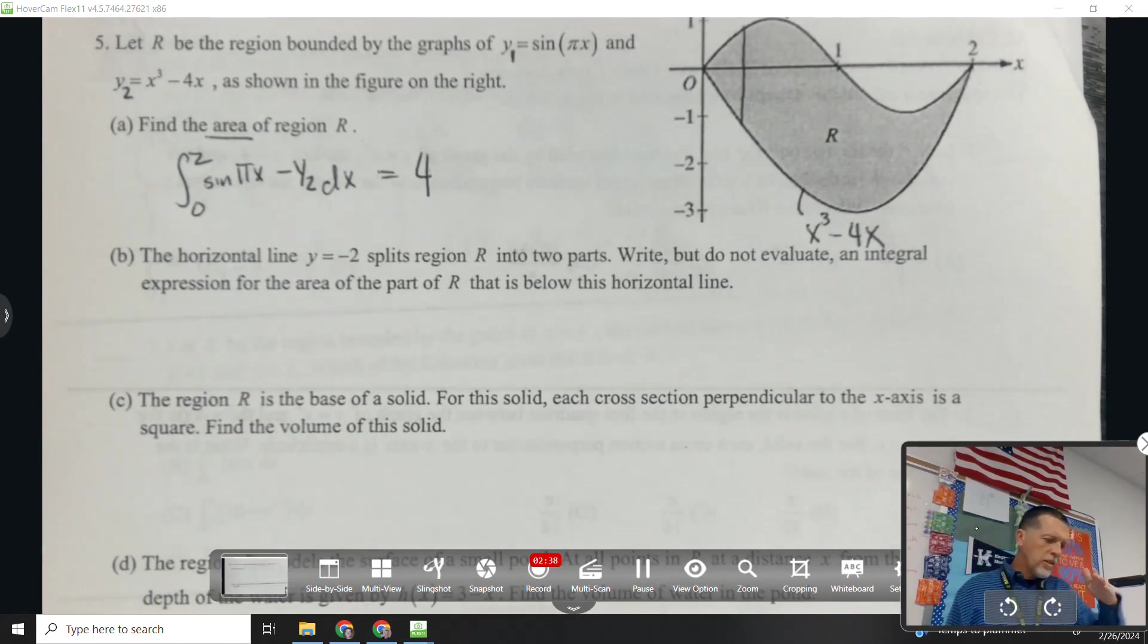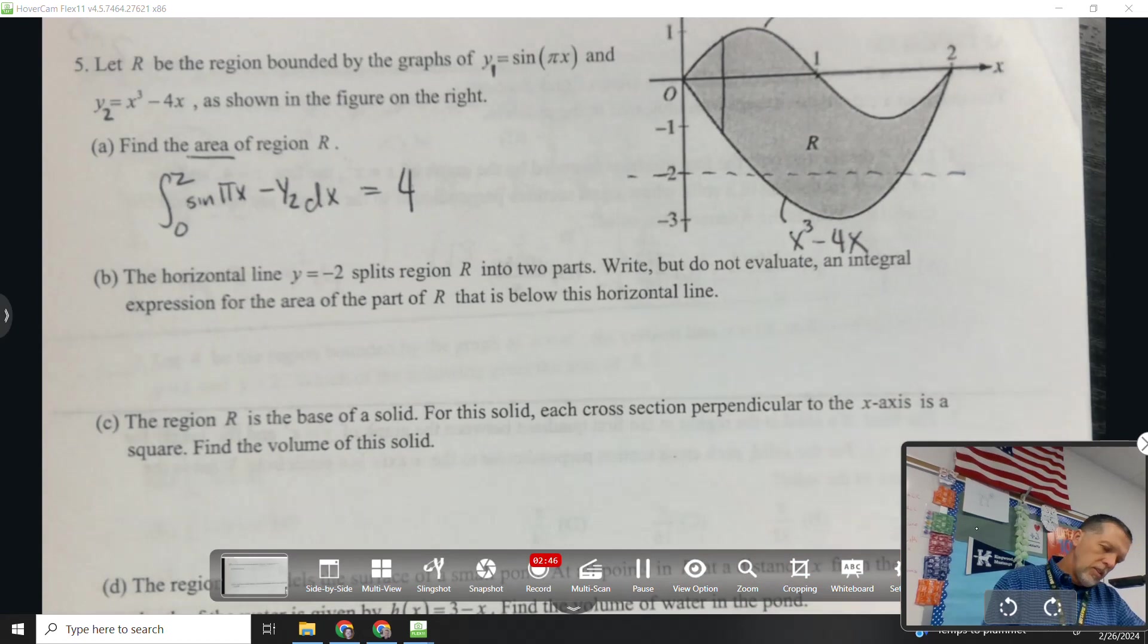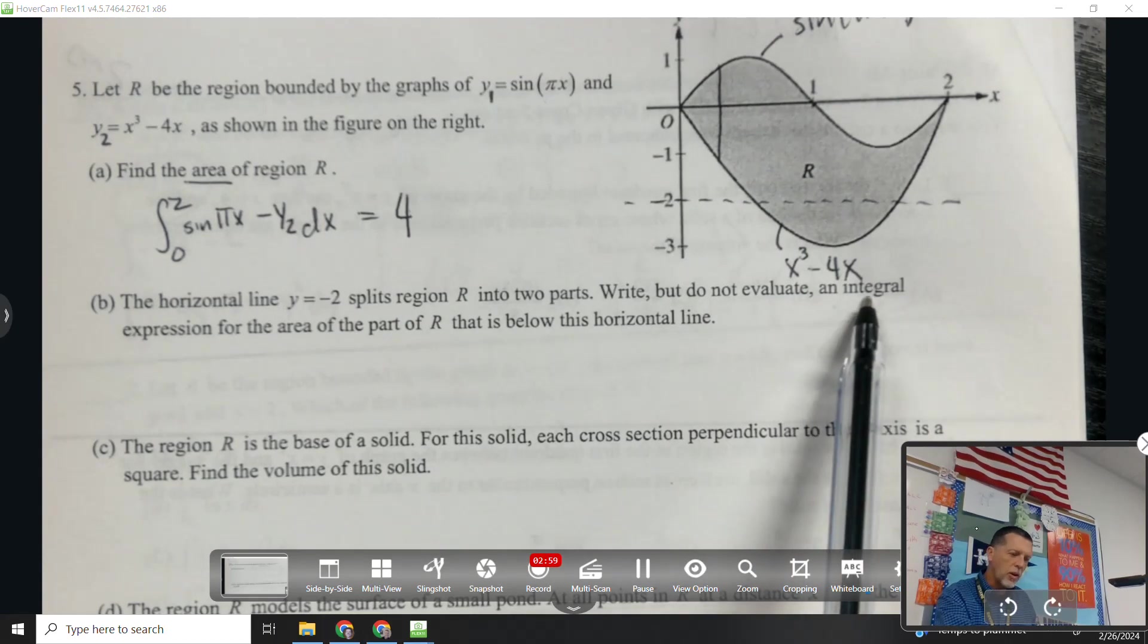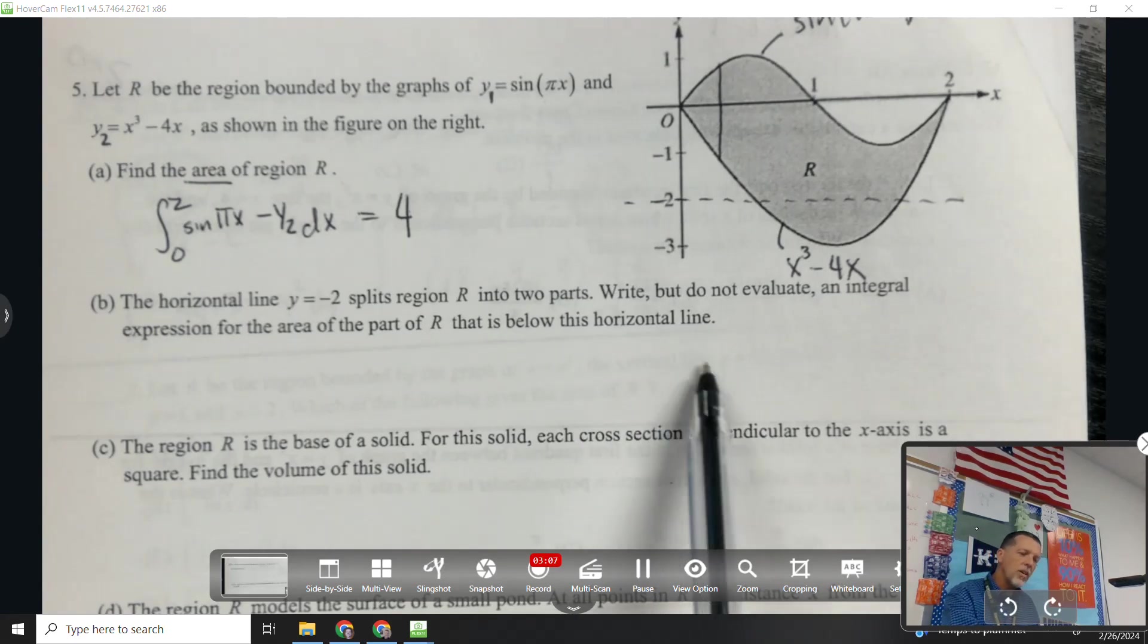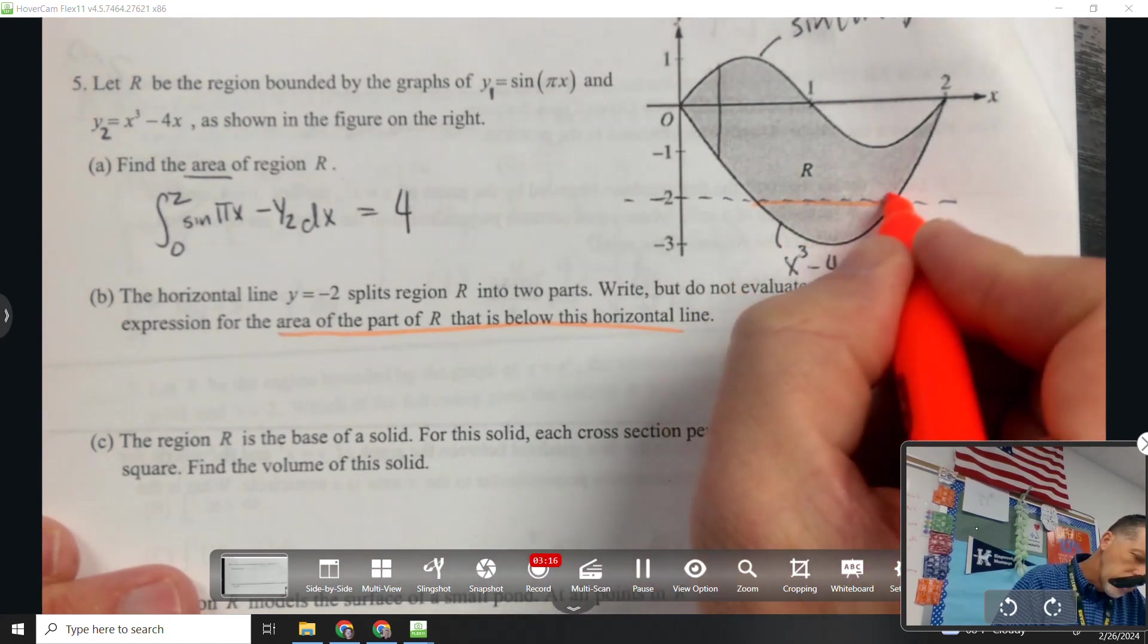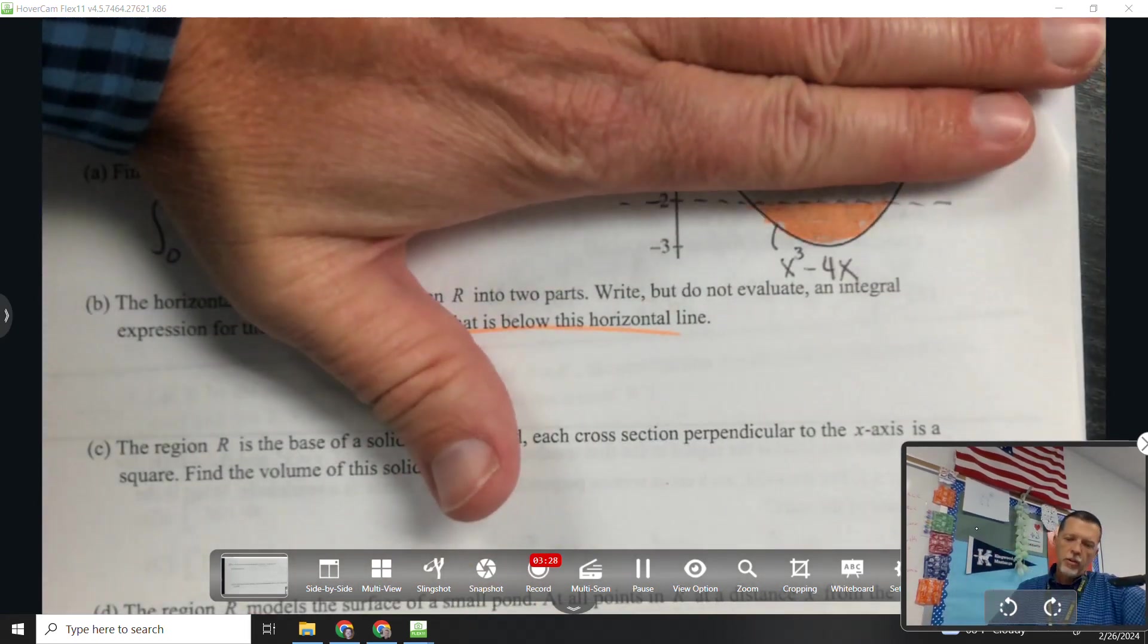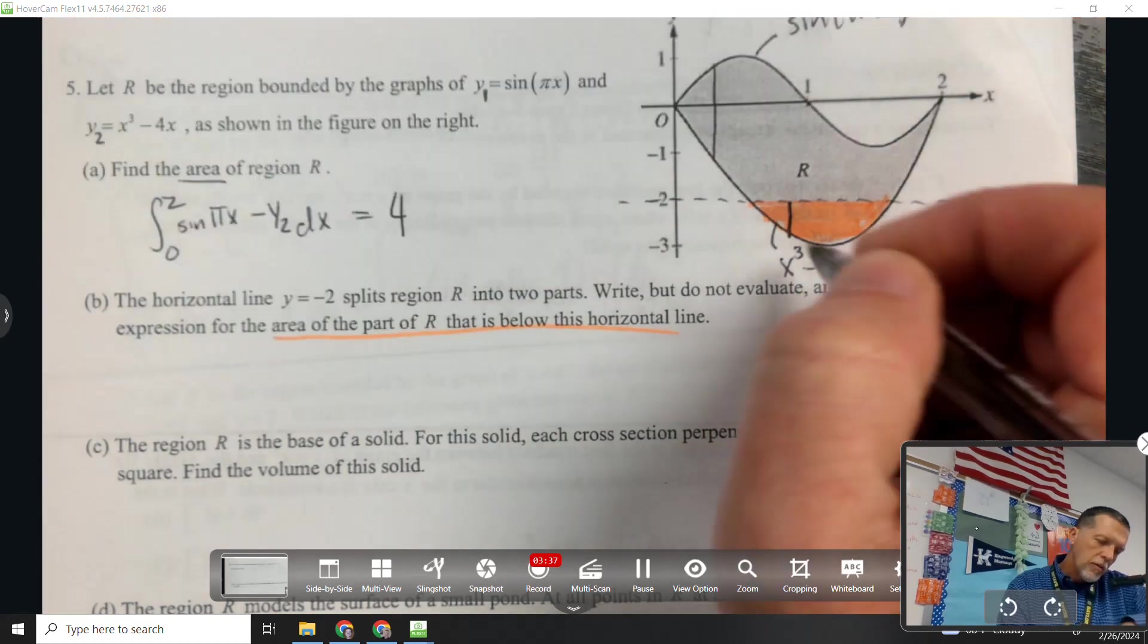Part B. The horizontal line y equals negative 2 splits the region into two parts, but definitely not two equal parts. We've done a couple of those, but that's not two equal parts. Write, but do not evaluate, an integral expression for the area of R that is below the horizontal line. So that would be that area. I can ignore all this other stuff going on. Which means that pi x stuff doesn't even enter in, I don't think. So I'm just going to do top minus bottom.